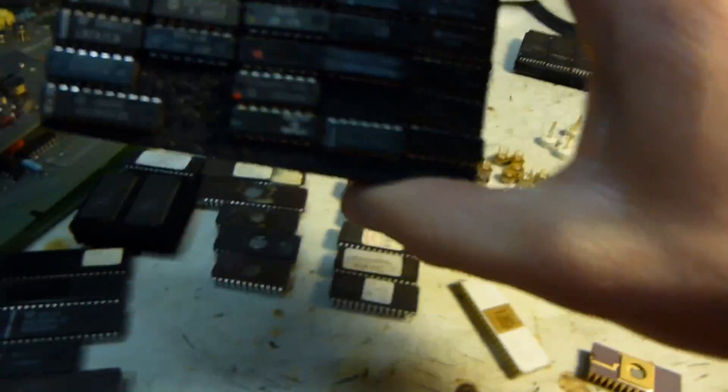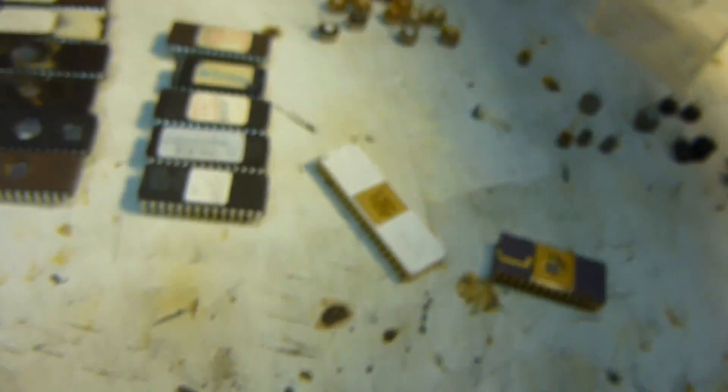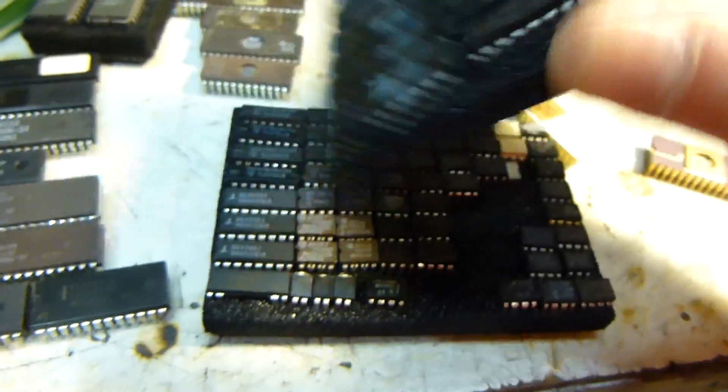And then I've got, oh here's some more ICs. And that one's got gold there, it's got lots of gold on it. Not sure if it's worth anything. These are mostly plastic here and these are more of the I guess it's a ceramic of some kind.